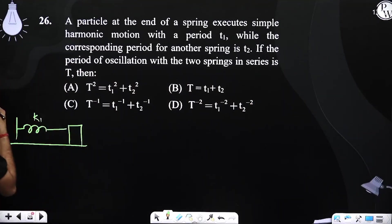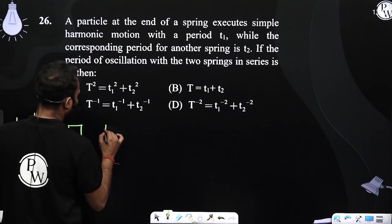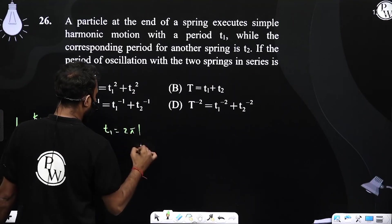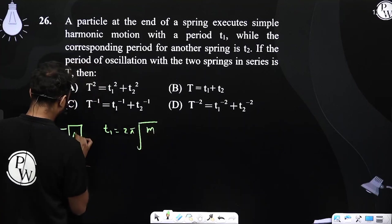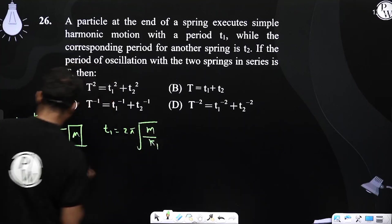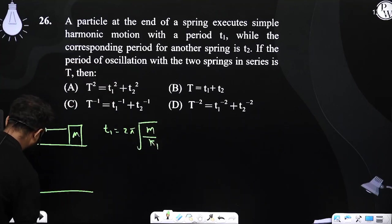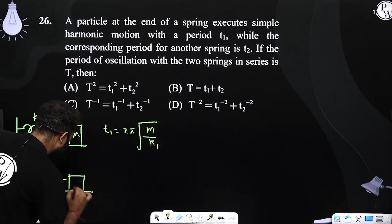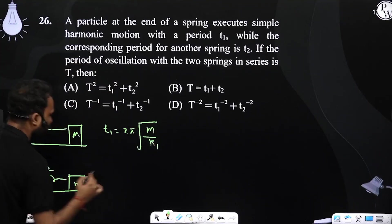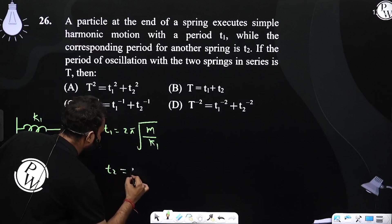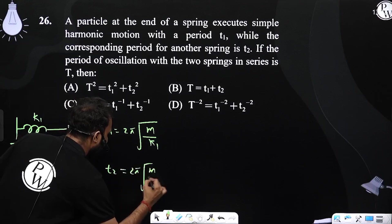First spring is constant k1, time period is t1, which is nothing but 2π under root m by k1. Similarly, this spring is constant k2, time period is 2π under root m by k2.